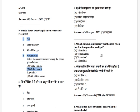Which vitamin is primarily synthesized when the skin is exposed to sunlight? The options are: Vitamin A, Vitamin B12, Vitamin C, and Vitamin D. The answer is Vitamin D.